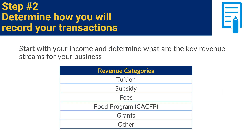Now that you've determined how you will account for funds, you need to determine how you're going to record your transactions. For many small child care businesses, it will be easy to record transactions on a sheet of paper or a spreadsheet, such as Microsoft Excel or Google Sheets. You want to set up some simple categories to start. Begin with your income — determine what the key revenue streams are for your business, that is, the sources from which you primarily receive your money. Parent fees will likely be one source. Another might be a child care subsidy or payments from the food program, CACFP. Perhaps there are additional funds that you receive for after school students or grant funds. Each one of these will be a separate revenue stream to account for.